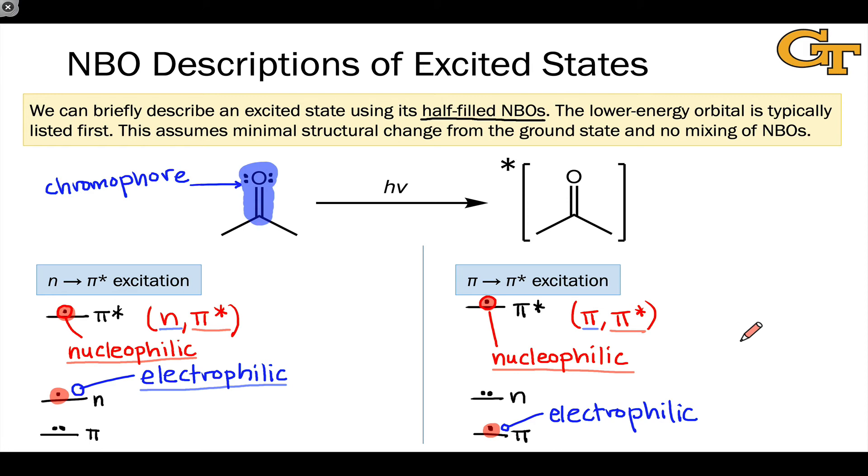This is a zeroth-order description, an approximate description of the excited state that assumes minimal structural change when we promote an electron from the n to π* level, and no mixing of the NBOs. It assumes that the n and π orbitals operate completely independently—there's no delocalization involving mixing. That holds up in many cases, but in some cases it doesn't, and there we need first-order corrections involving mixing of the n and π orbitals.